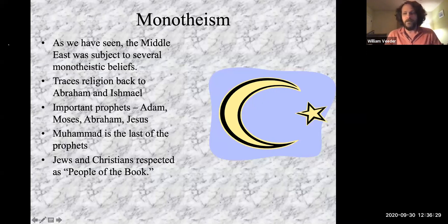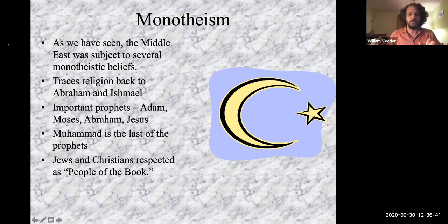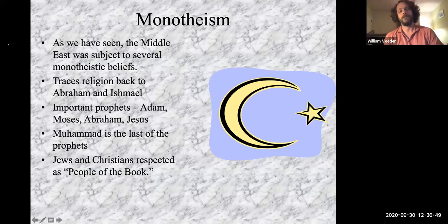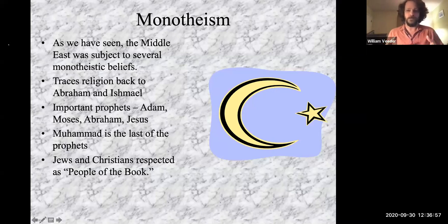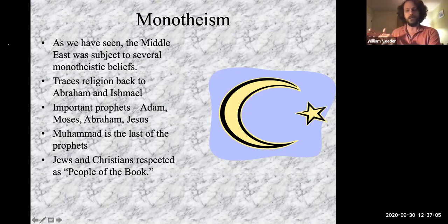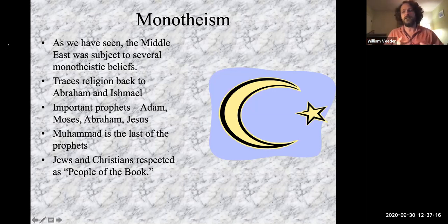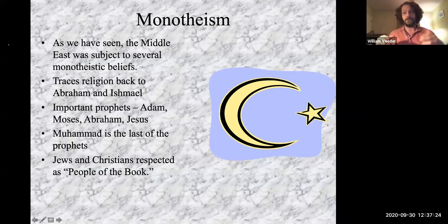Muslims believe that Muhammad is the last and final chapter in the same God's revelation to human beings. Muslims believe in the same God that Jews do, the same God that Christians do. There are differences — for example, Muslims believe that Jesus was not divine, and Muhammad is not divine; they were simply prophets, people that God chose to talk to. Muslims believe that Jews and Christians are 'people of the book,' which was very important to early Muslims. These people of the book were separate from a group called pagans — anybody that wasn't Jewish or Christian — who Muslims regarded as a great threat.